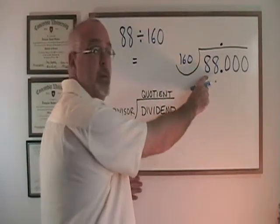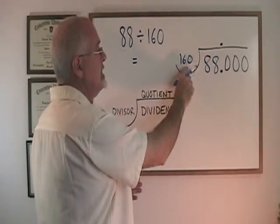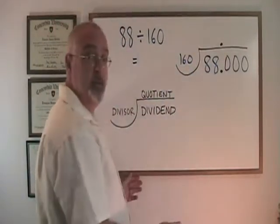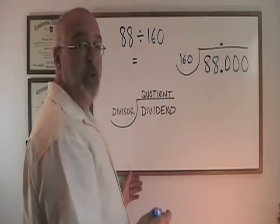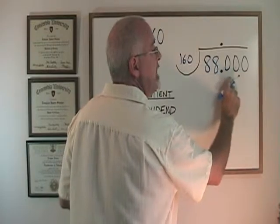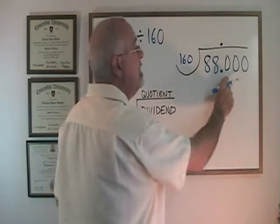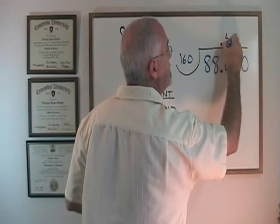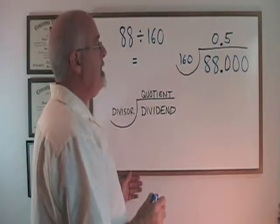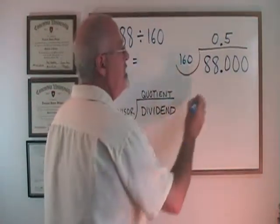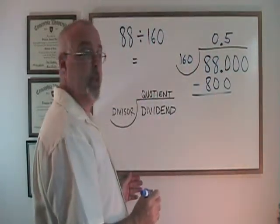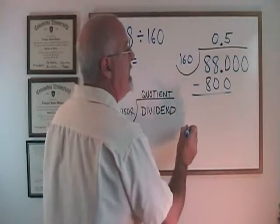Then we ask ourselves: does 160 fit into 8? No. Does 160 fit into 88? No. It will fit into 880 five times with some left over. The last digit in the 880 that I'm using is this zero, so my answer of 5 gets written right above that zero. And I write a zero here. 5 times 160 is 800. I write it there and I subtract. 880 minus 800 is 80.